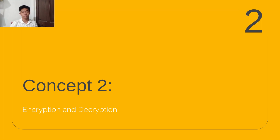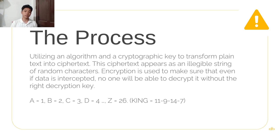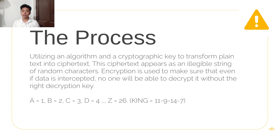Encryption and decryption are essential for safe online browsing. Encryption uses an algorithm and a cryptographic key to transform plain text into ciphertext — an unintelligible string of random characters — ensuring intercepted data cannot be read without the correct decryption key. A simple example of encryption is substituting numbers for letters: A=1, B=2, C=3, Z=26, so KING would be encrypted as 11, 9, 14, 7.